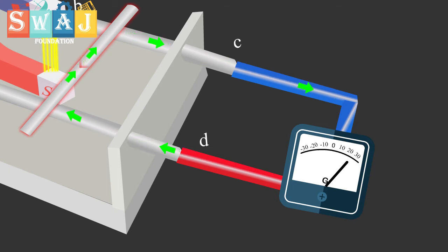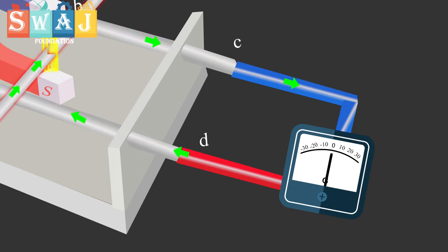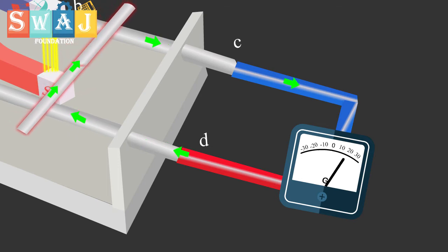This type of EMF is called Motional EMF which is produced due to the motion of a conductor across a magnetic field.